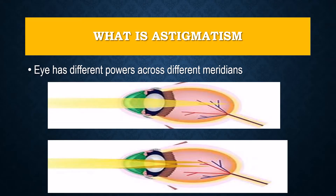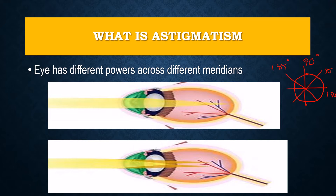First, we should know what astigmatism is. In a spherical error, all the meridians will have equal power. That means even if you carry out refraction at 90 degrees, 180 degrees, 45 degrees, or 135 degrees, the power will be the same in all meridians, and the resulting image will be formed as a point focus on the retina.